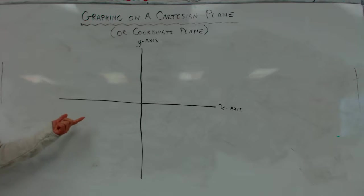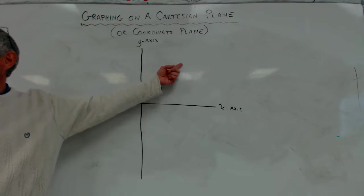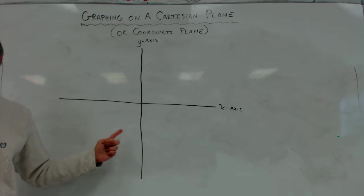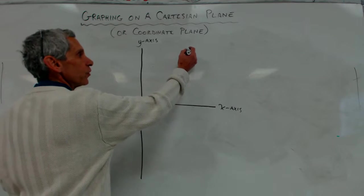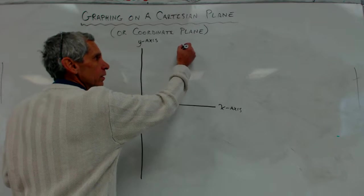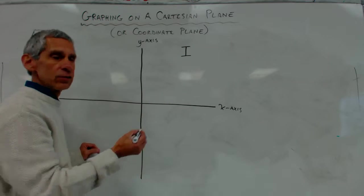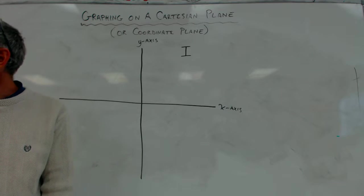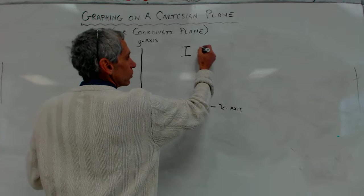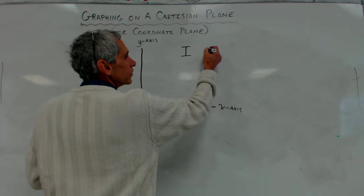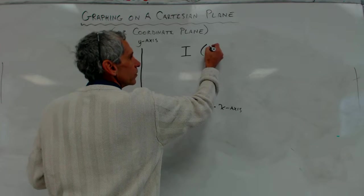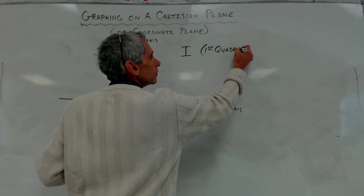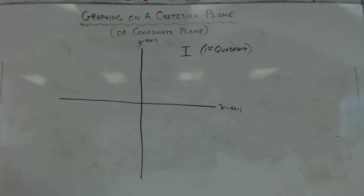Now, there are four what we call quadrants, right? Four quadrants. This is the first quadrant, and when you label a quadrant, you label it with a Roman numeral. So Roman numeral one means the first quadrant.